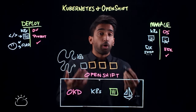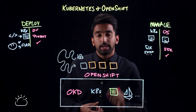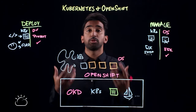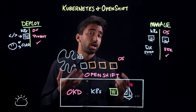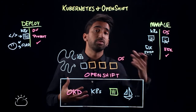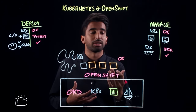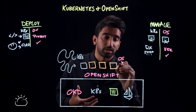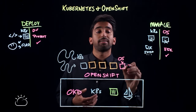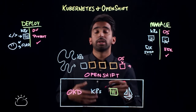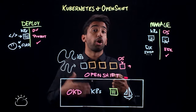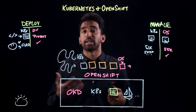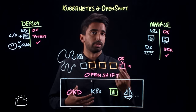On the OpenShift side of things, it's a little easier. They have Ansible playbooks and installers to bring new VMs into your cluster. It's a fairly straightforward process, and they even have ways to handle auto-scaling — spinning up new VMs in response to load.